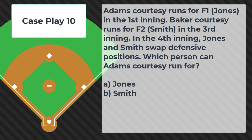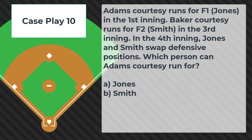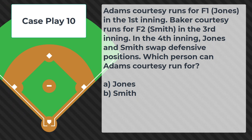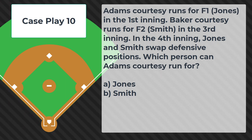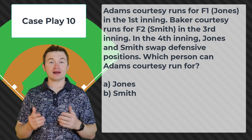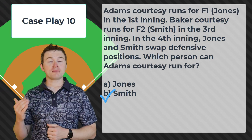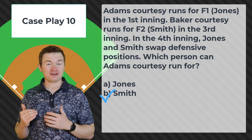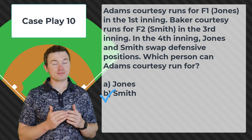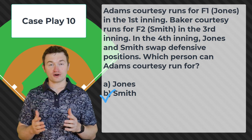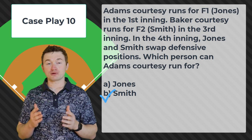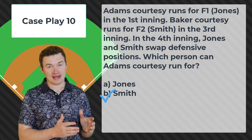Case play number ten: Adams courtesy runs for F1 Jones in the first inning. Baker courtesy runs for F2 Smith in the third inning. In the fourth inning Jones and Smith swap defensive positions. Which person can Adams courtesy run for? The correct answer is Smith. A courtesy runner runs for a specific position, not a specific player. So when the players swap positions, Adams — who was the courtesy runner for the pitcher — can now only run for whoever is the pitcher, which is now Smith.